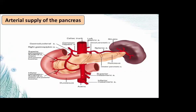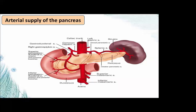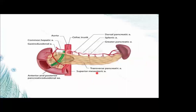The pancreas is supplied by branches from the celiac trunk and superior mesenteric artery. The superior pancreaticoduodenal artery arises from the gastroduodenal artery, which arises from the hepatic artery, and divides into anterior and posterior divisions. The inferior pancreaticoduodenal artery arises from the superior mesenteric artery. The body of the pancreas is supplied by branches from the splenic artery. The dorsal pancreatic artery arises from the proximal splenic artery, or from the celiac trunk, or from the superior mesenteric artery, and divides into two parts as the transverse pancreatic artery.